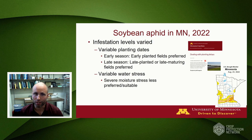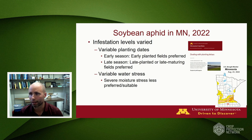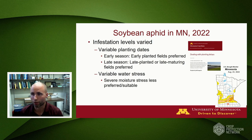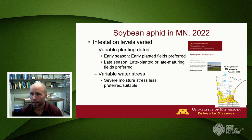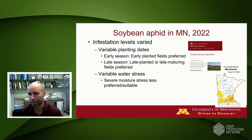In addition to variability in planting dates, we had pretty variable moisture conditions. Looking at the U.S. drought monitor map for Minnesota from late August, conditions were quite variable. For soybean aphid, heavily drought-stressed soybean plants become much less suitable or less preferred. So populations were lower in the heavily drought-stressed areas and higher in the areas that received some timely rains.